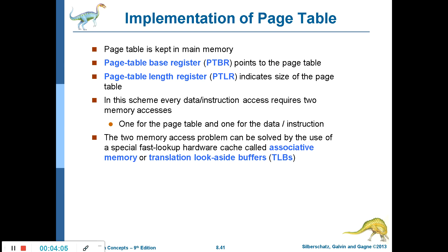If you have 4 GB RAM — around 4000 MB — and you divide that by 4 MB, there will be 1024 pages or frames. To maintain this you need a page table. The page table base register (PTBR) points to the base address of the page table, and the page table length register (PTLR) indicates the size of the page table.